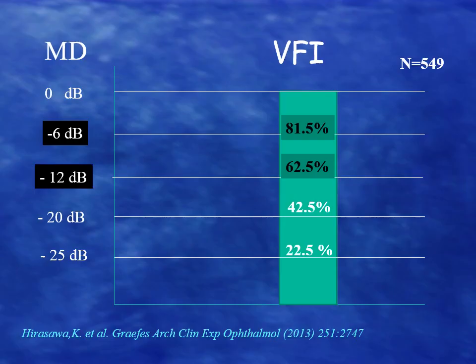For the classification of glaucoma, for each one decibel change in the mean deviation, we are going to have approximately three percent change in the visual field index. In a paper studying around 550 persons, this is the correlation between the values of the mean deviation and the visual field index. Thank you for your attention.